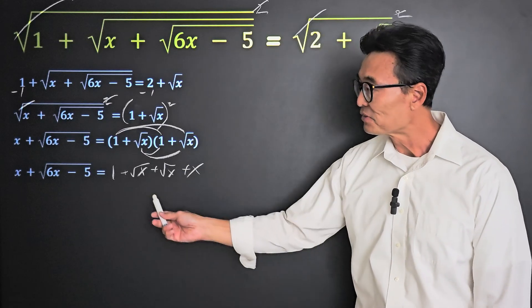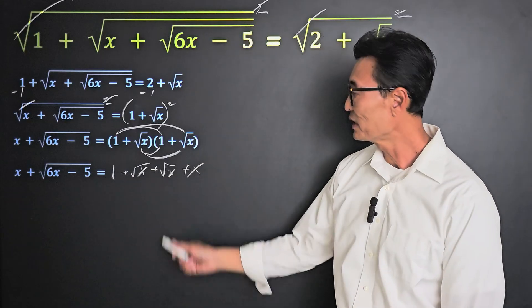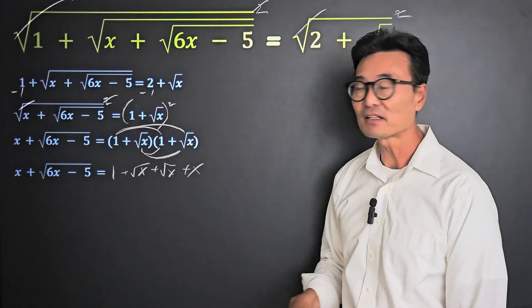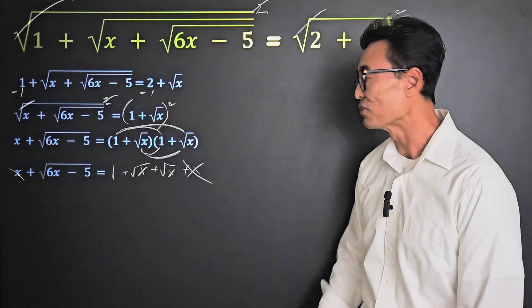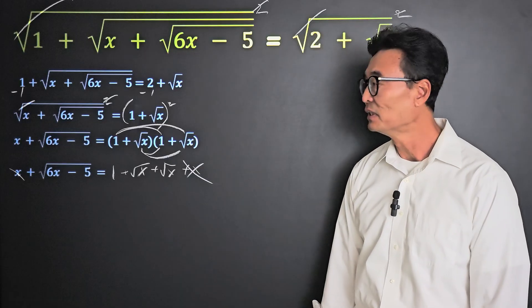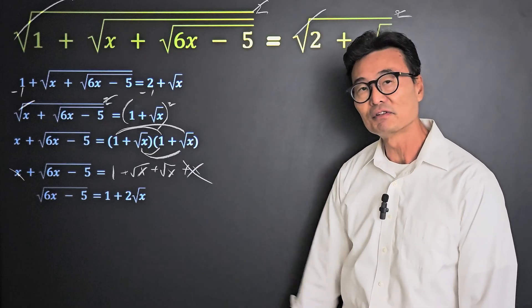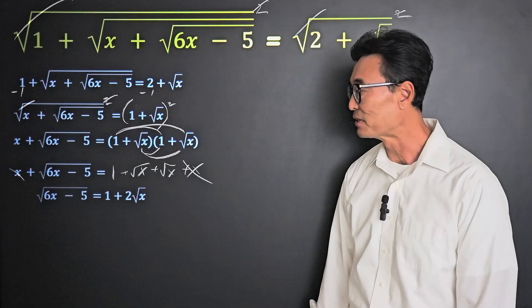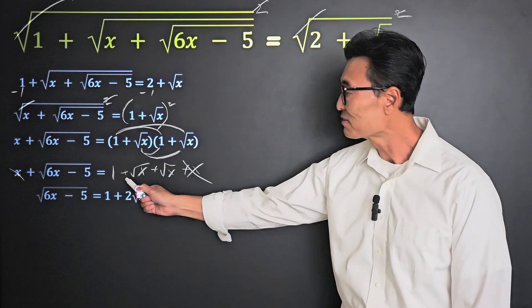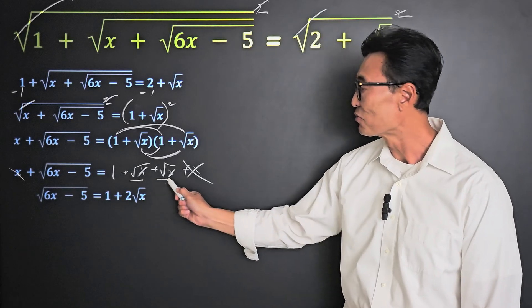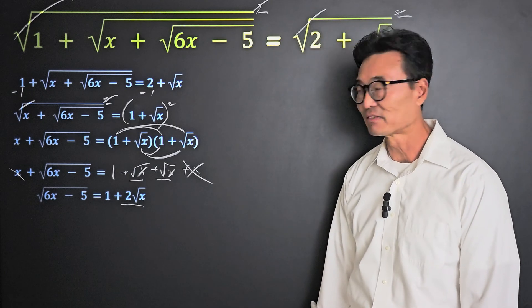As you can see, we have x on the left side of the equal sign and another x on the right, so we'll go ahead and subtract or cancel them off. Leaving us with square root of 6x minus 5 on the left, and then 1 plus root x plus root x, which is 2 root x.